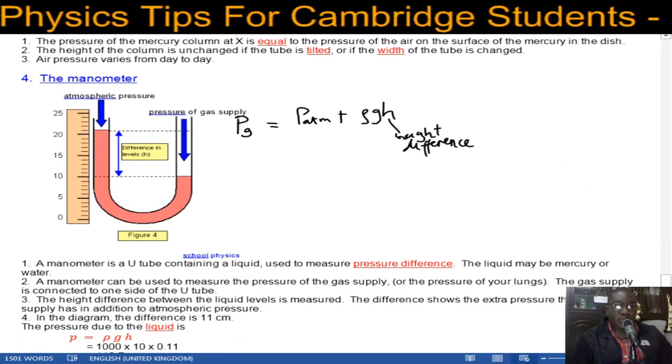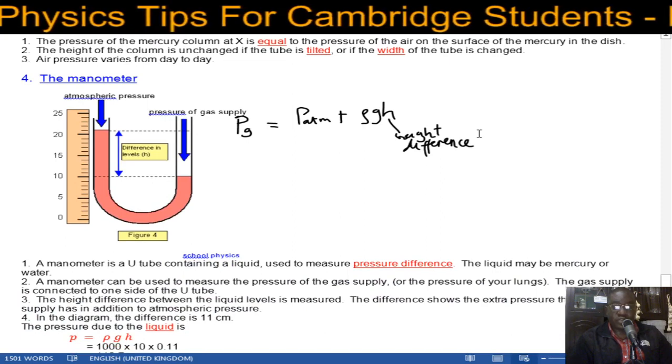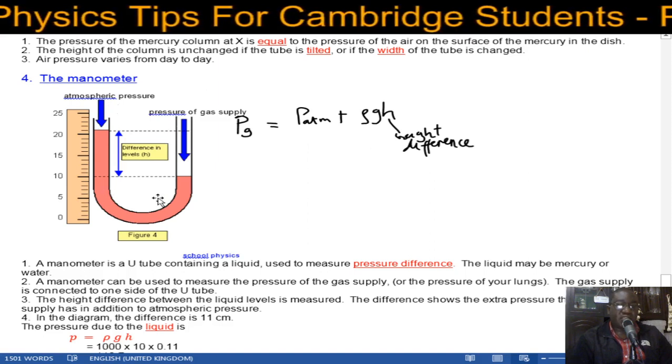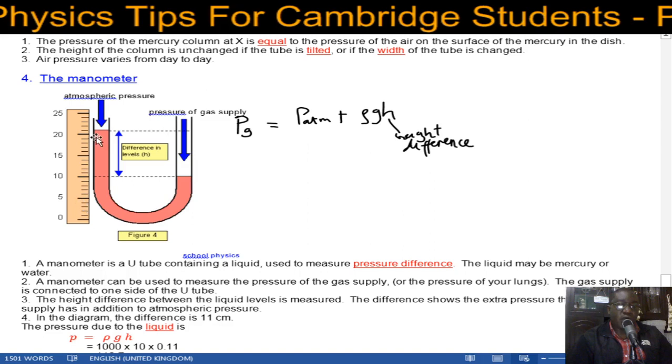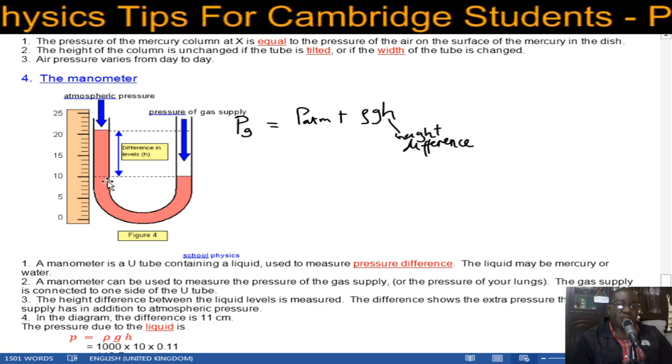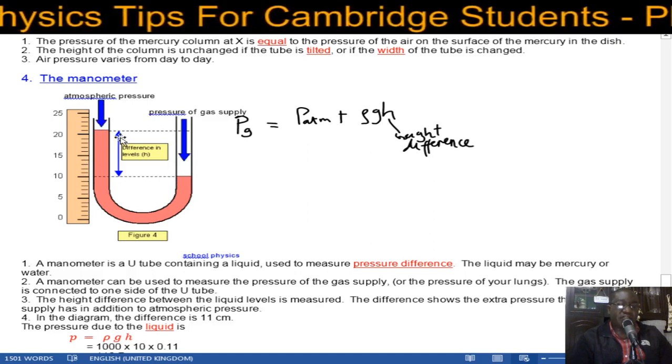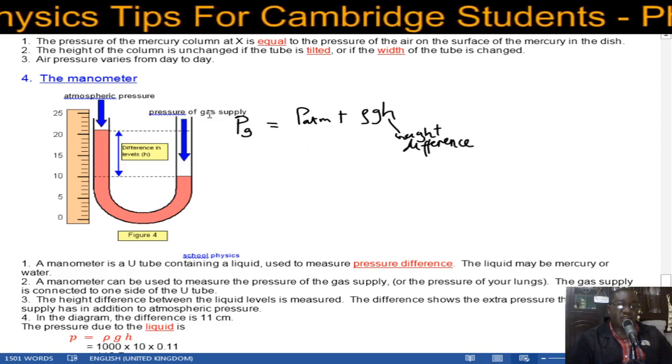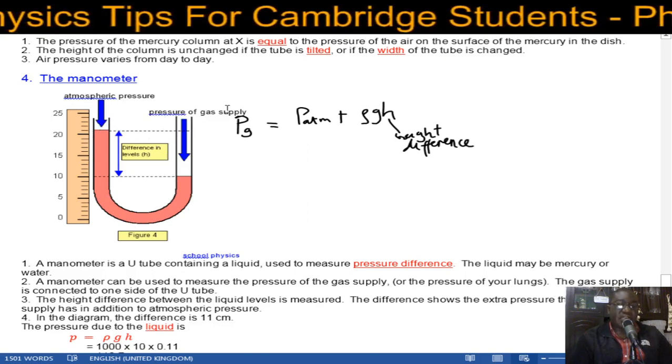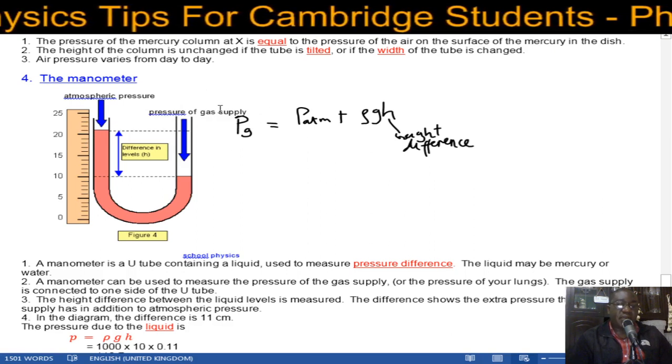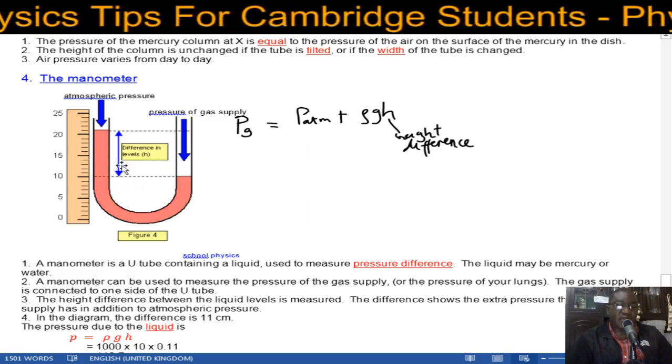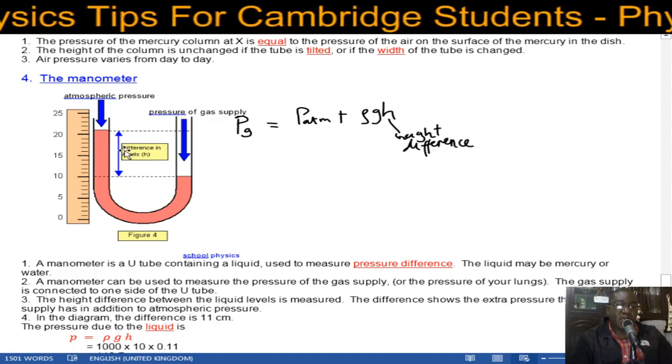Now we'll talk about the manometer. A manometer, this is called a U-tube manometer, it's in the shape of a U. Atmospheric pressure acts the same in both directions, which means that the liquid will be at the same level. If there's no gas pressure or gas supply, this should be the same level because atmospheric pressure acts the same. Now if you suddenly open a gas tap, you find this side will be pushed downwards while this side will be pushed up, creating a height difference h.